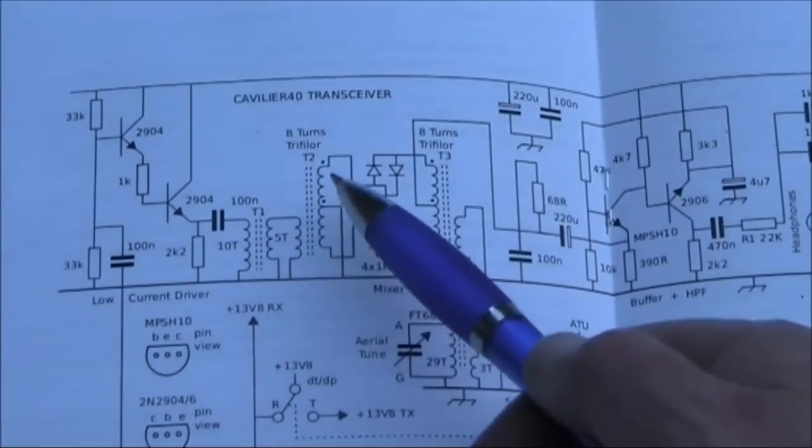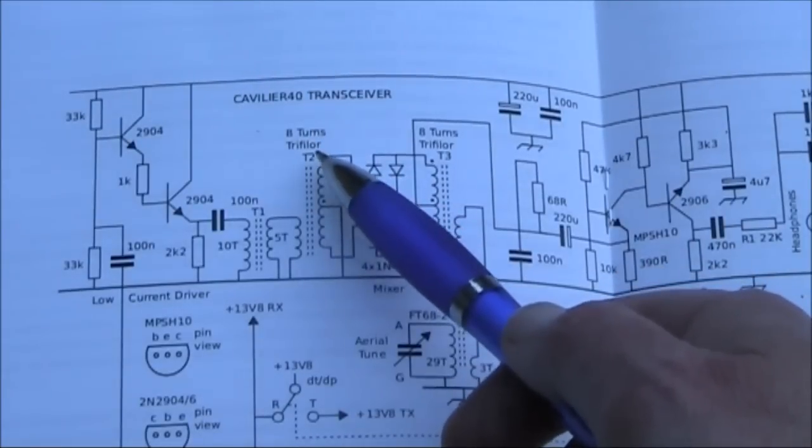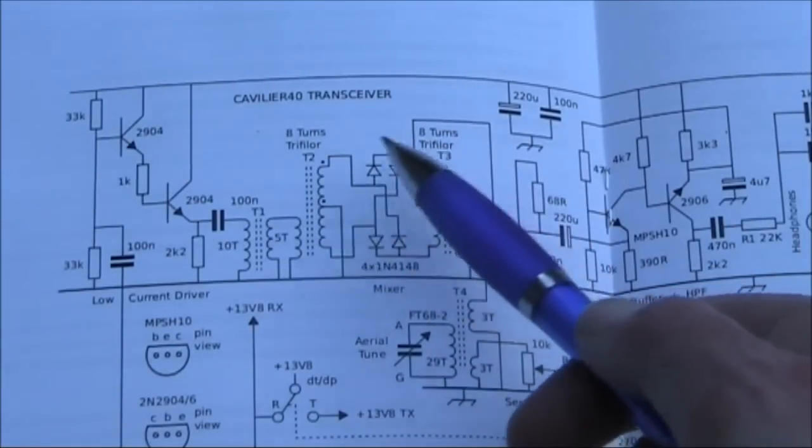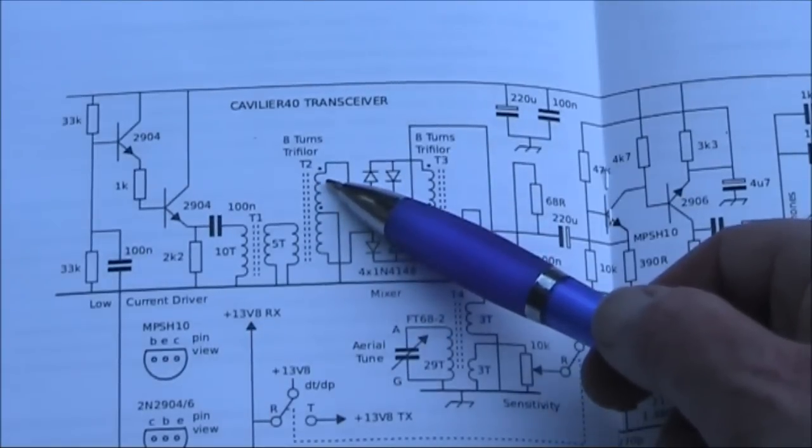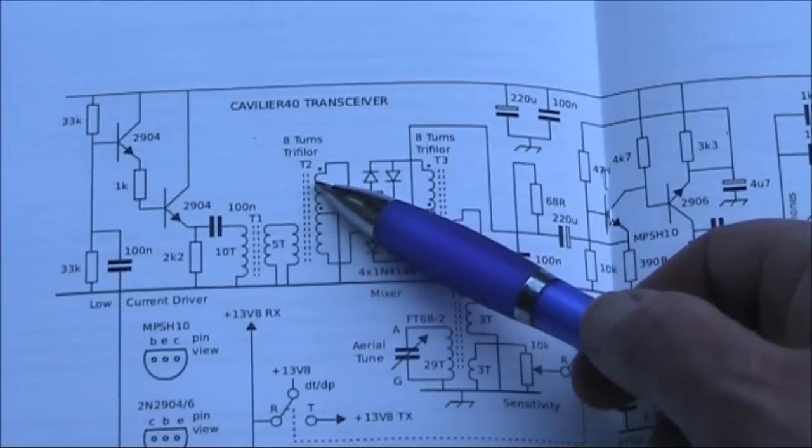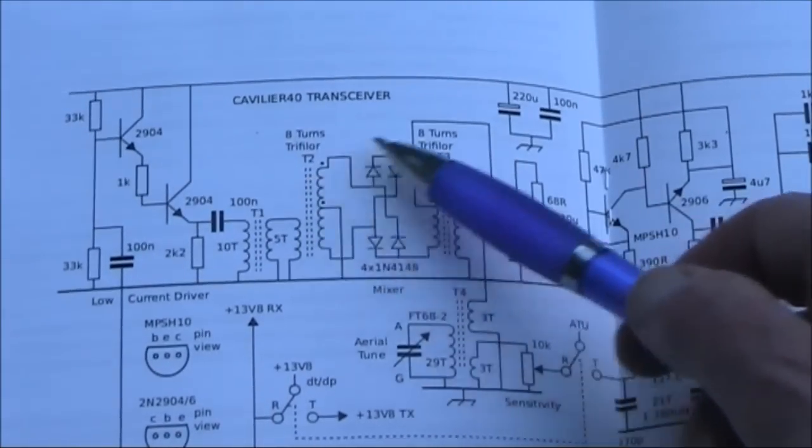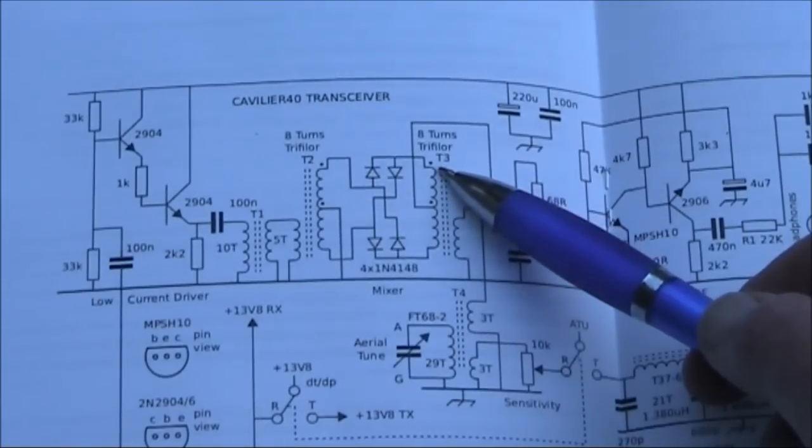They look broadband, also 8 turns trifilar, another 8 turns trifilar. You need to look at the details in the parts list, but that's likely to be on a ferrite and broadband. So if you're changing the frequency of the transceiver, then you can leave those well alone.